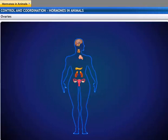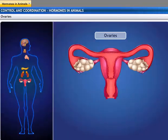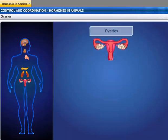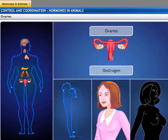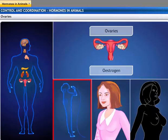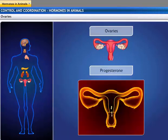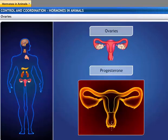A pair of ovaries is the female sex organ that lies in the abdominal cavity. They produce two hormones, namely estrogen and progesterone. Estrogen controls the changes that occur during puberty, like a feminine voice, soft skin, and mammary glands. Progesterone controls the uterine changes in the menstrual cycle and helps in the maintenance of pregnancy.